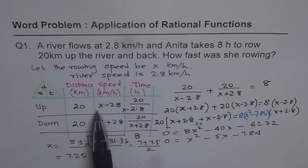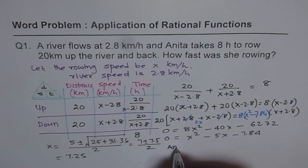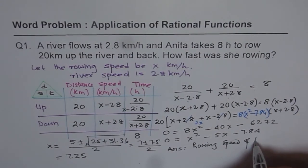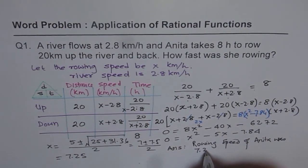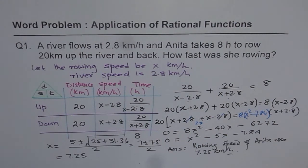The negative answer is not valid, so we take x equals (5 plus 7.5) divided by 2, which is 14.5 divided by 2, giving 7.25. So the rowing speed of Anita was 7.25 kilometers per hour. The method is: define variables, make a distance-speed-time table, fill in values, form the equation, and solve it. Thank you.